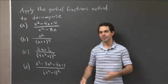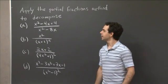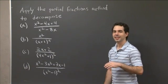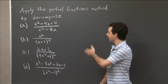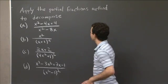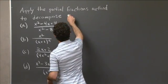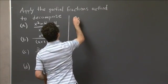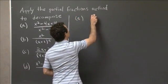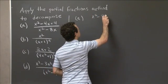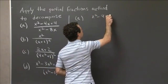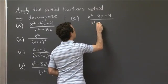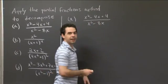Welcome back. Hopefully you had some fun working on these. They're a little bit tricky — I picked them to be a little bit tricky. Let's go through them one by one. With the first one, I have x squared minus 4x plus 4 over x squared minus 8x.